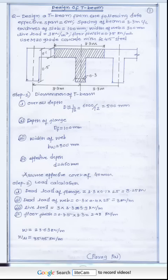Effective span is given 6 meters. Spacing of beam 3.3 meters center to center. Thickness of slab 100 mm. Width of web 300 mm. Live load 3 kN. Floor finish 0.75. We are using M20 grade concrete and Fe415 steel.